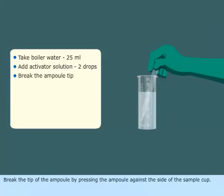Break the tip of the ampoule by pressing the ampoule against the side of the sample cup. The sample will rise to fill the ampoule and mixes with the reagent, leaving a small bubble.